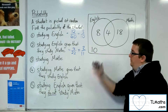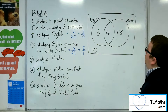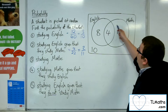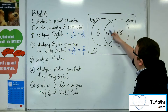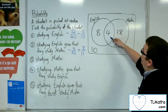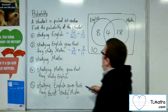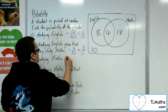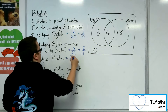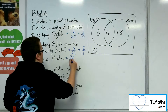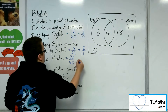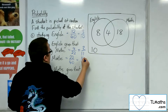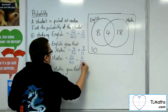If we're asked for just studying maths, there are 22 students that study maths out of the 40. So that would be 11 out of 20.